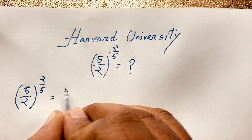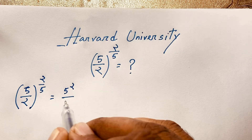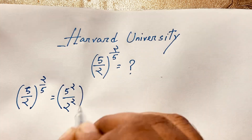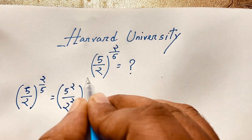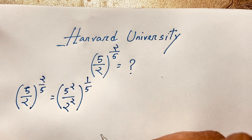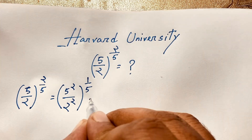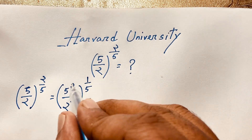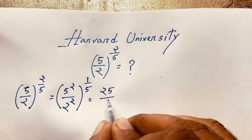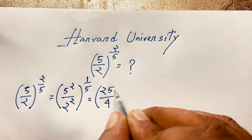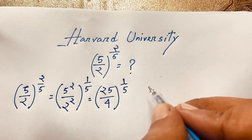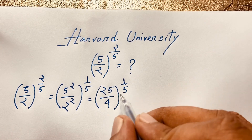We separate the numerator and denominator powers: this becomes (5^2 / 2^2) to the power (1/5). We then evaluate: 5² = 25 and 2² = 4, giving us (25/4)^(1/5).